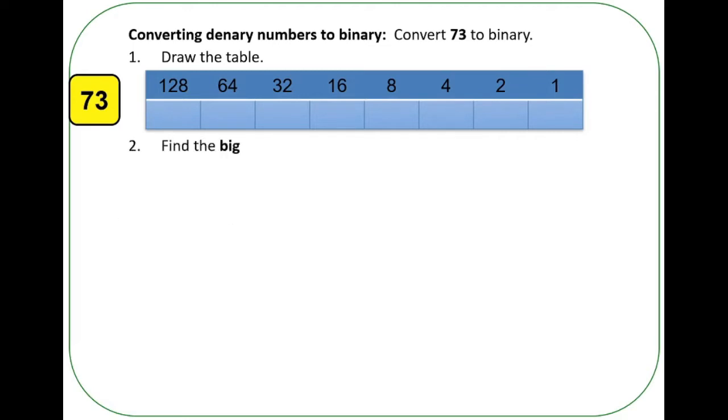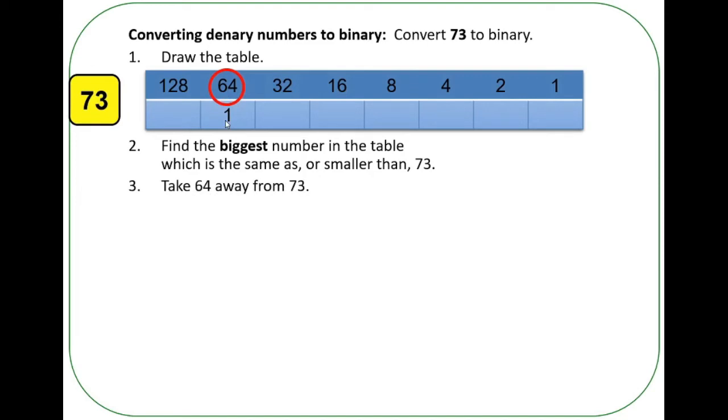So the way to do it is start by finding the biggest number in the table which is the same as or smaller than 73. In this case, the number that's next biggest is 64. So take 64, put a one against it, and then take 64 away from the 73. We're left with 9.